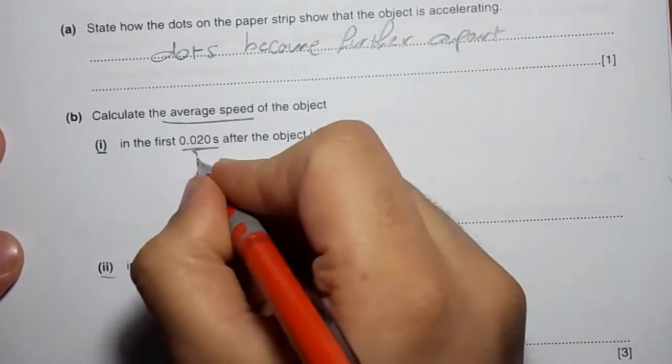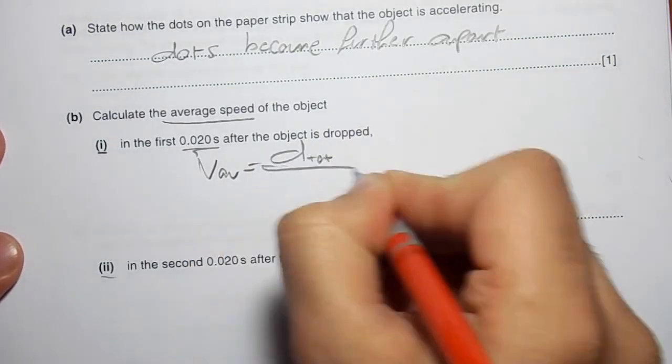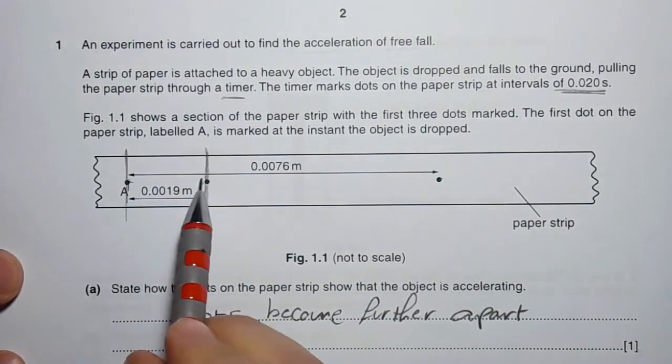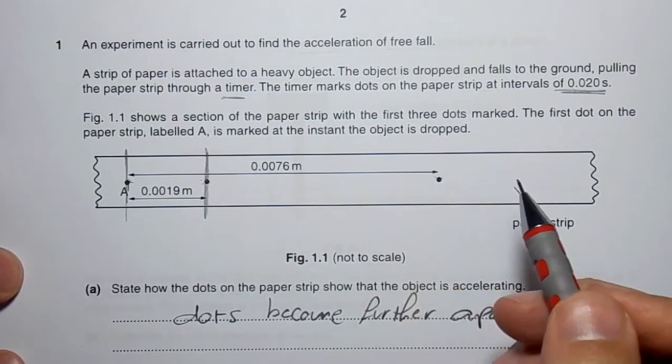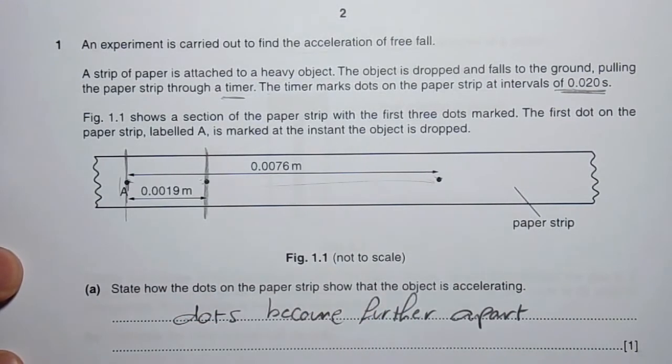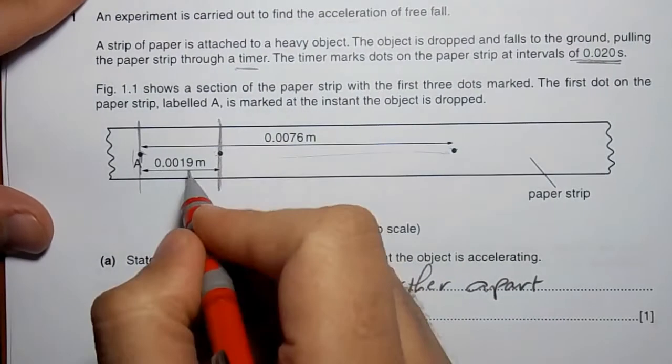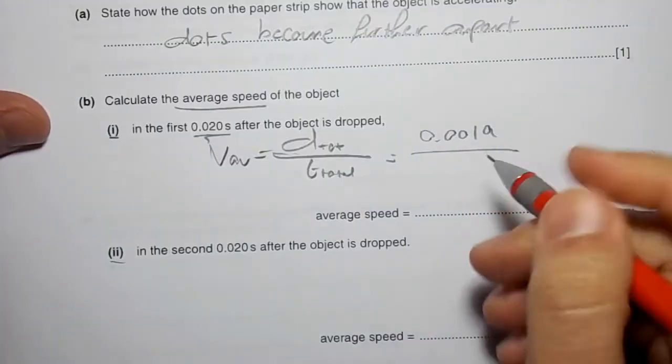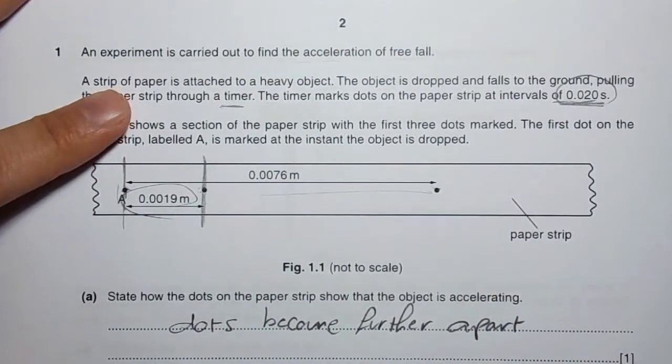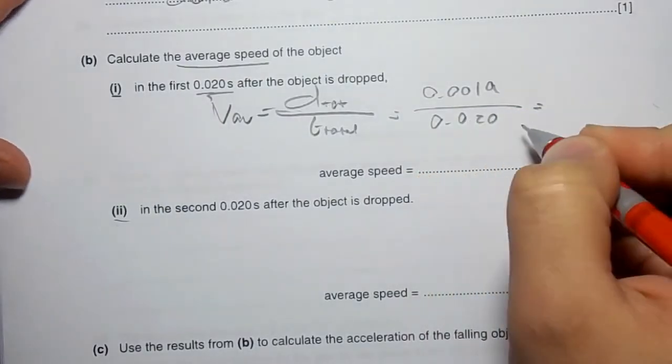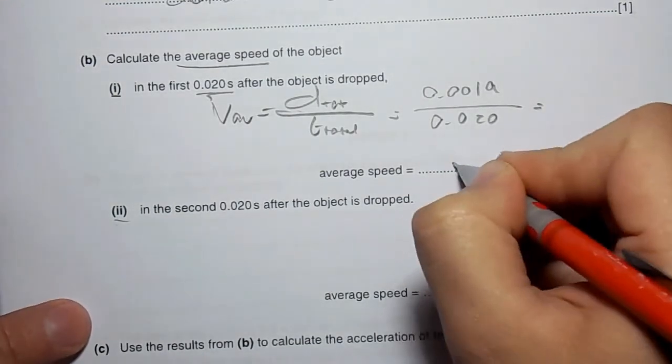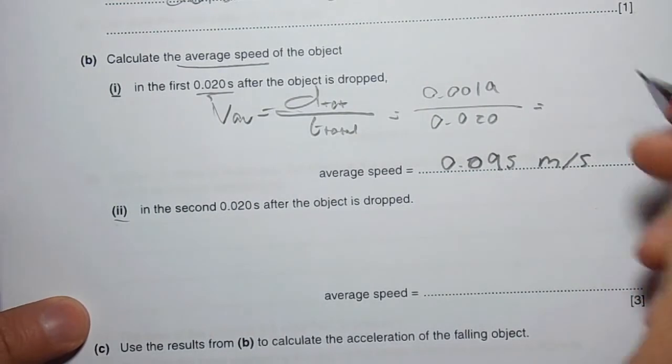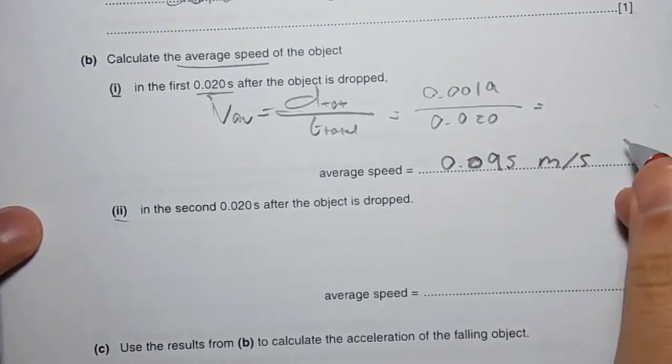For the average speed, I have total distance divided by total time. Since the speed is not constant, we calculate average speed. The distance in the first interval is 0.0019 meters. The time between dots is 0.020 seconds. So dividing these, you get 0.095 meters per second.